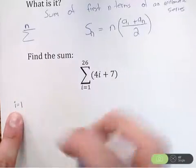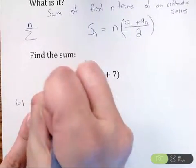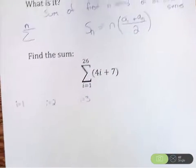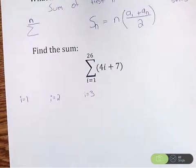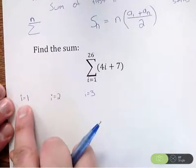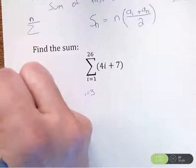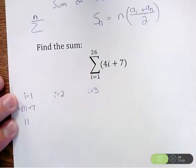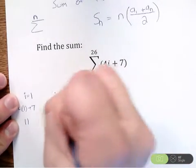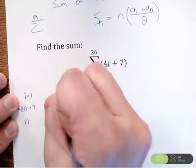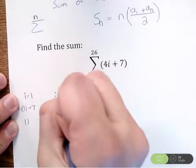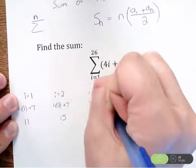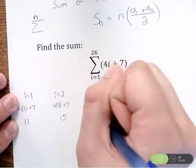So I want to know, is this arithmetic? What I'm going to do is find the first few terms and see if it follows that arithmetic pattern. So we start with i equals 1, then i equals 2, then i equals 3, so on and so forth. I just want to check and make sure this is actually arithmetic. If i is 1, we'd have 4 times 1 plus 7, which gives us 11. If i is 2, we'd have 4 times 2 plus 7, so 8 plus 7, that's 15. If i is 3, we'd have 4 times 3 plus 7, which is 19.